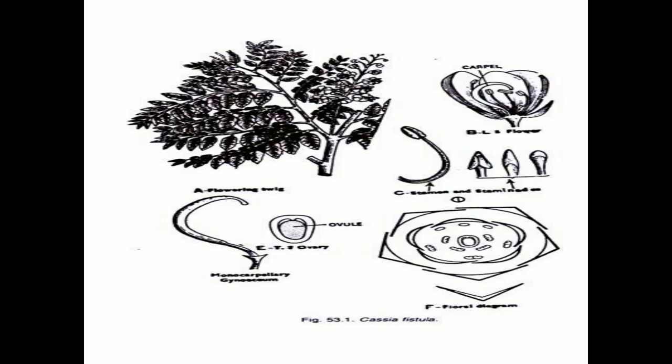This is the floral diagram showing the androecium, gynoecium, twig, and flower of the family Caesalpiniaceae — Cassia. This is the floral diagram along with the floral formula. Thank you, friends.